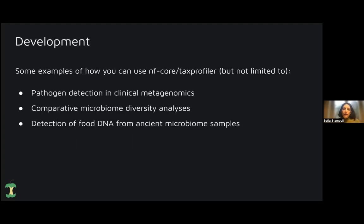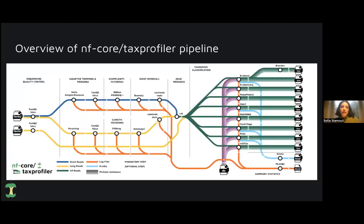There are a few examples of how you can use NFCore TaxProfiler in different contexts: pathogen detection in clinical metagenomics, comparative microbiome diversity analysis, and detection of food DNA from environmental microbiome samples — though use cases are not limited to those. This is the overview of how the pipeline looks like, and I will go into more details in the next slides.